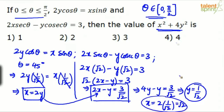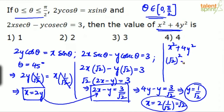Now substitute into the requirement x² + 4y²: x² = (√2)² = 2, and 4y² = 4 × (1/√2)² = 4 × (1/2) = 2. So x² + 4y² = 2 + 2 = 4. The final answer is option 4.